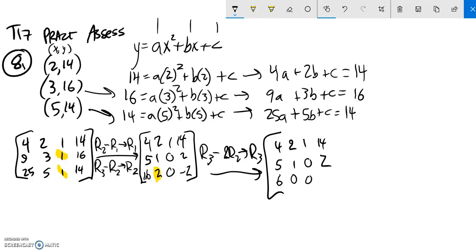And then negative 2 minus 2 times negative 2. So this would be a negative 2 minus 4. So that's going to be a negative 6. Now this is in a form where I can solve it. And I can see right here that 6a equals negative 6. So a must equal negative 1.